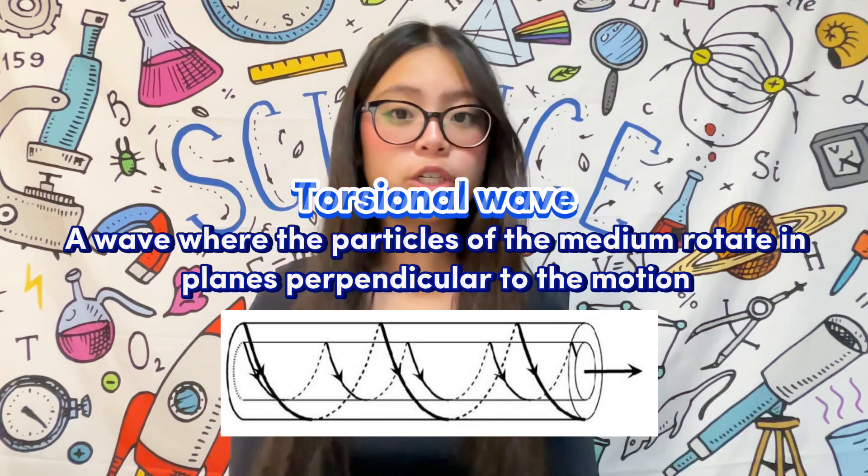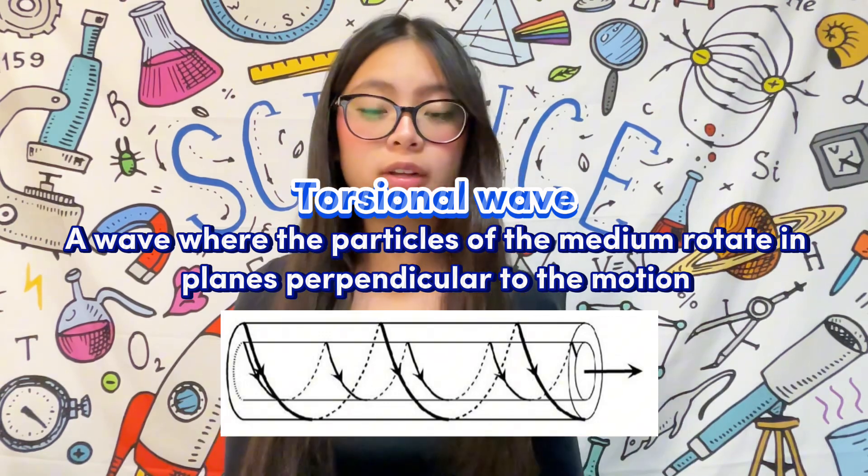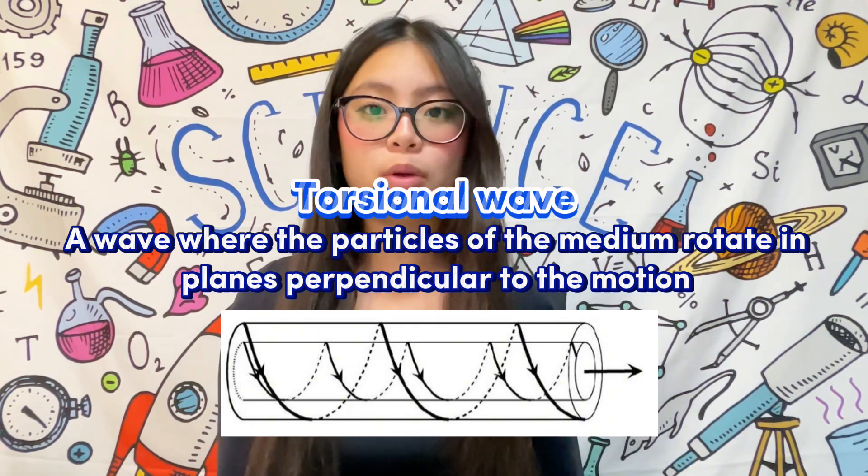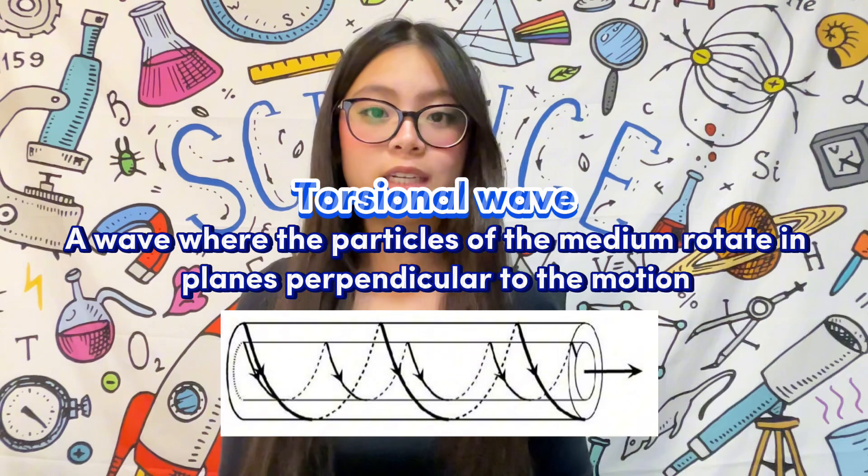And finally, a torsional wave is a wave where the particles of the medium twist or rotate in planes perpendicular to the direction of motion. An example of a torsional wave is the Tacoma Narrows twisting bridge wave.